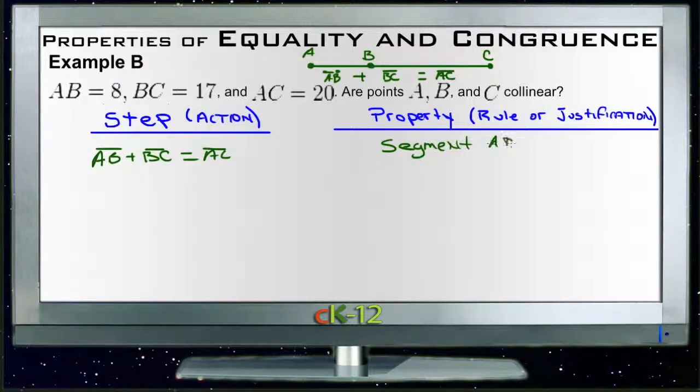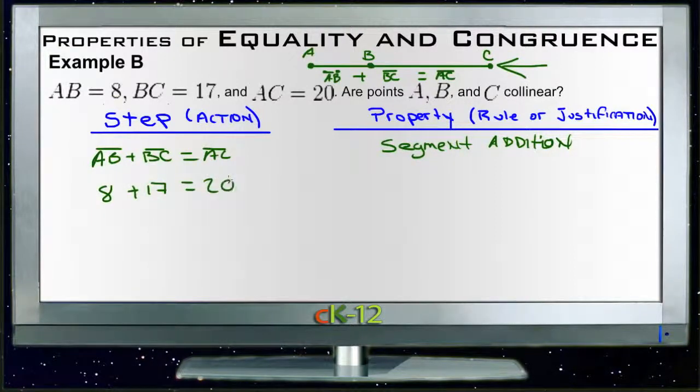So the segment addition postulate, that's the name for this rule that we just described up here. So now we can just go through and substitute the values that were given for each of these things. So 8 + 17 should be 20. This is our substitution property of equality.